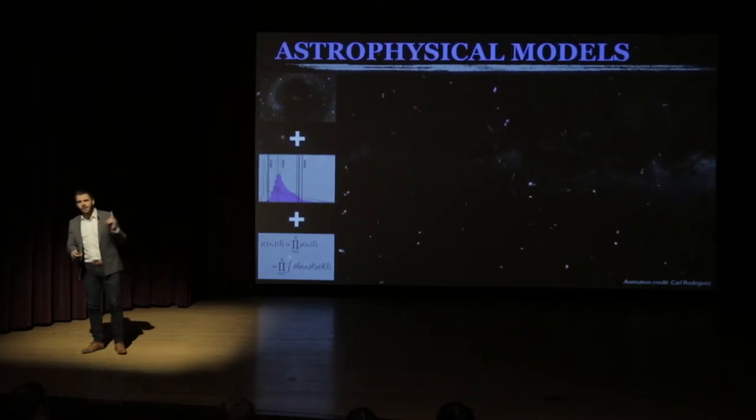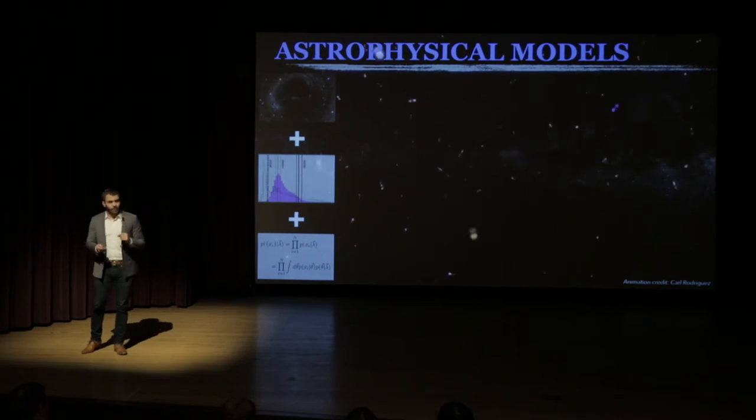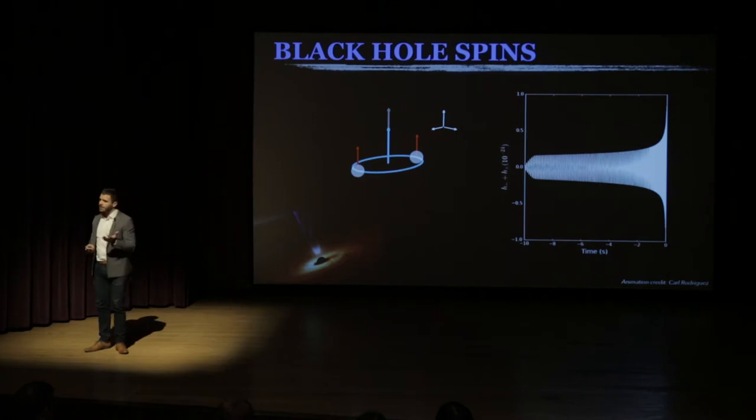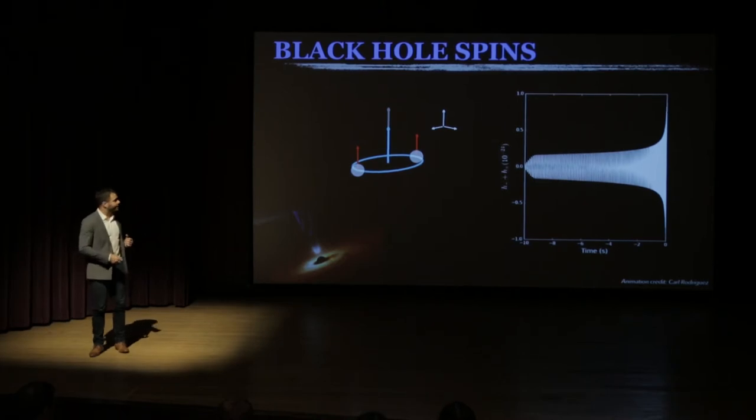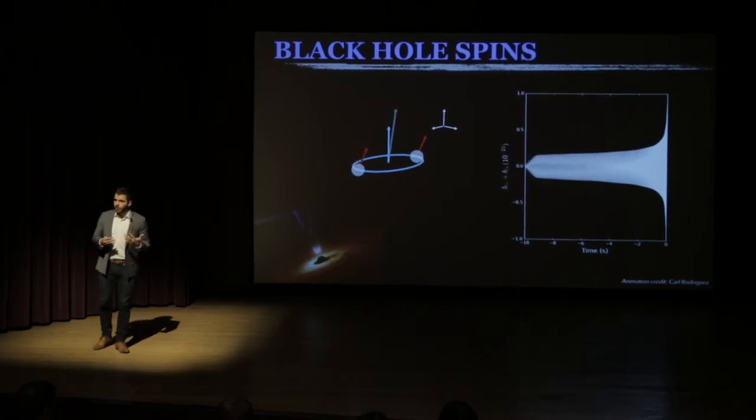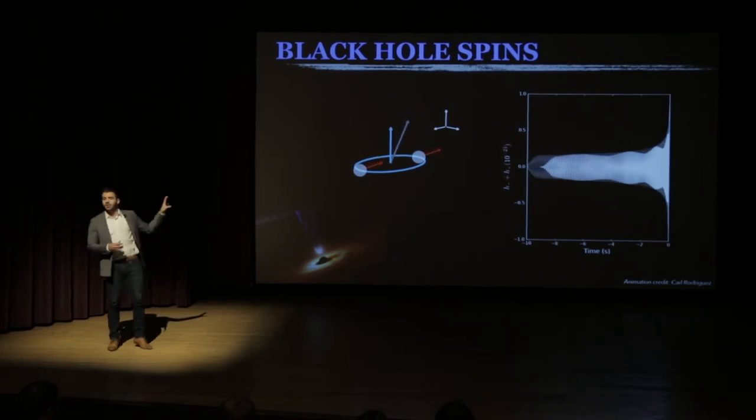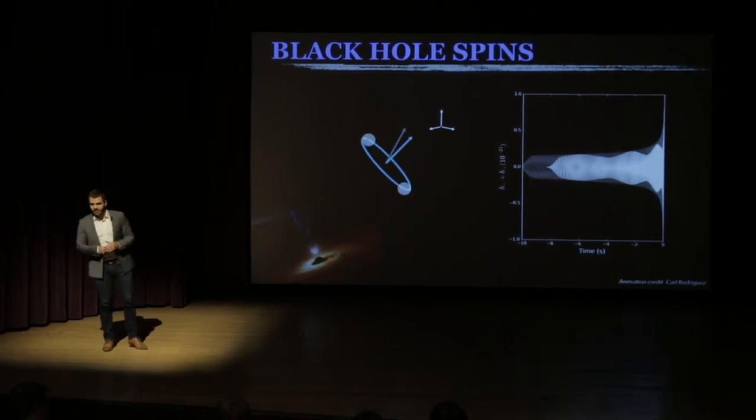One route that we can actually go, rather than just looking at how big these black holes are that we're detecting, is looking at how they're spinning. Both theory and observation tell us that black holes have a spin associated with them as well. And it turns out that the different processes that evolve to form these black holes and the different environments in which these black holes form greatly affect the way that these black holes are spinning.